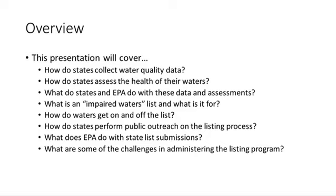To say a quick word about what this presentation will cover: some of those topics include how do states and other entities collect water quality data, how do states assess the health of their waters, what do states and EPA do with these data and assessments, what is an impaired waters list and what is it for, how do waters get off and on the list, how do states perform public outreach on the listing process, what does EPA do with state impaired waters list submissions, and what are some of the challenges in administering the listing program. And to start us off with a discussion about water quality monitoring and assessment, I will turn this back over to Susan.